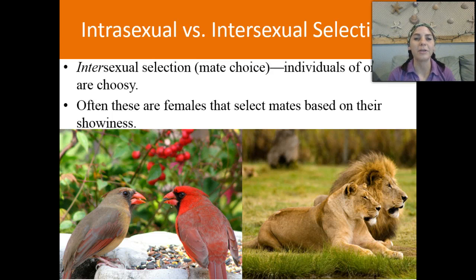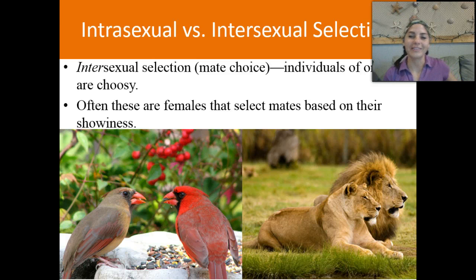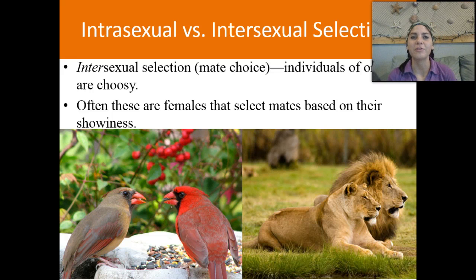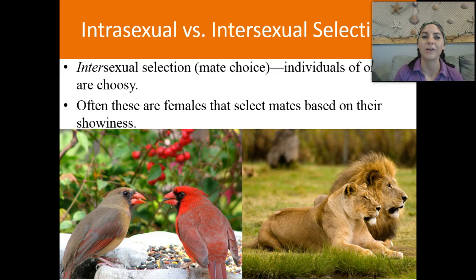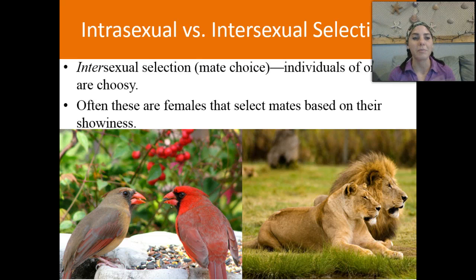The second type of sexual selection is intersexual selection — individuals of one sex being choosy. These often are females, which apparently my female dog has decided to make an appearance. Say hello, Emma. Those are often females that select mates based on their showiness. The female wants a hot guy, basically, and this is very famous in the bird realm. Many male birds are going to be very colorful, bright, singing beautiful songs, fluffing their feathers, and dancing around like crazy, because they want to attract the female. She's going to choose whichever male she likes best — it might be his feathers, his song, or his little dance — but she gets to be choosy.